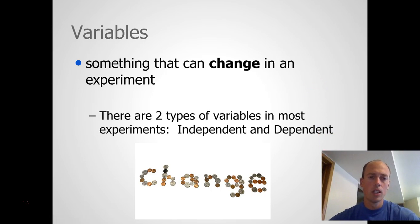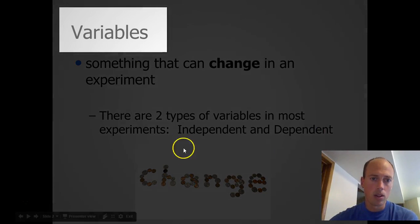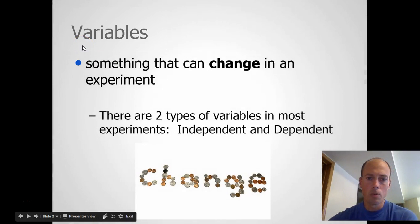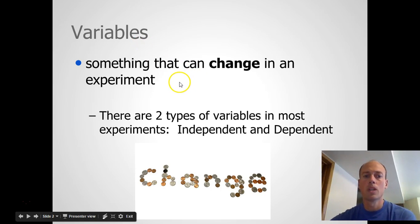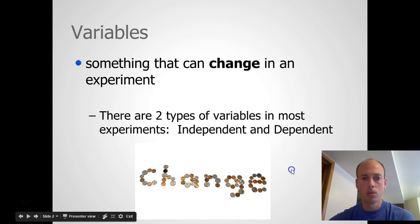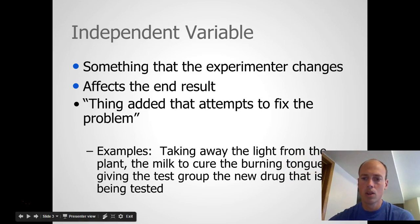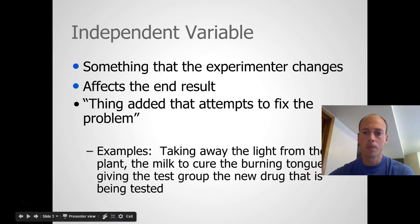Variable. If you look at that word — variables, whether it's independent or dependent that you'll learn about — variable is another word for change. So in both cases, something is changing. Something that can change in an experiment is a variable. There are two types: independent and dependent variables, so we'll learn about those right now.